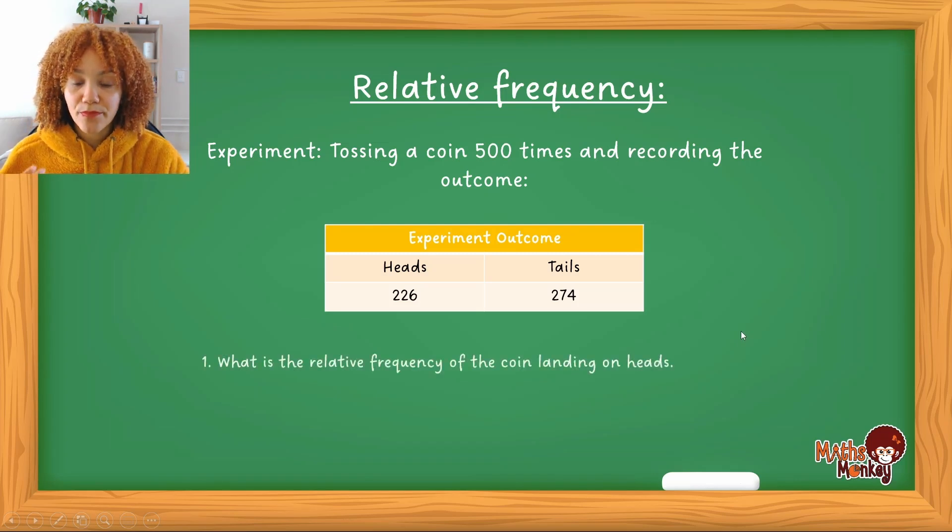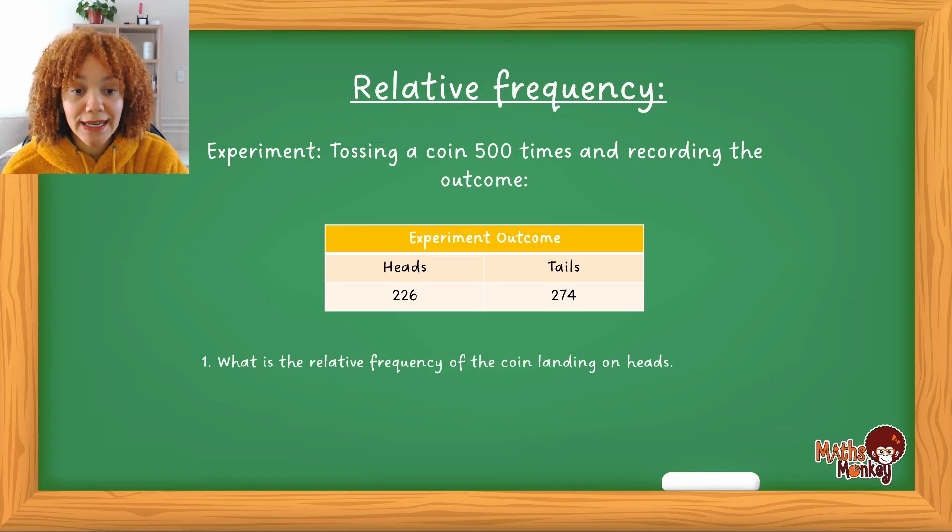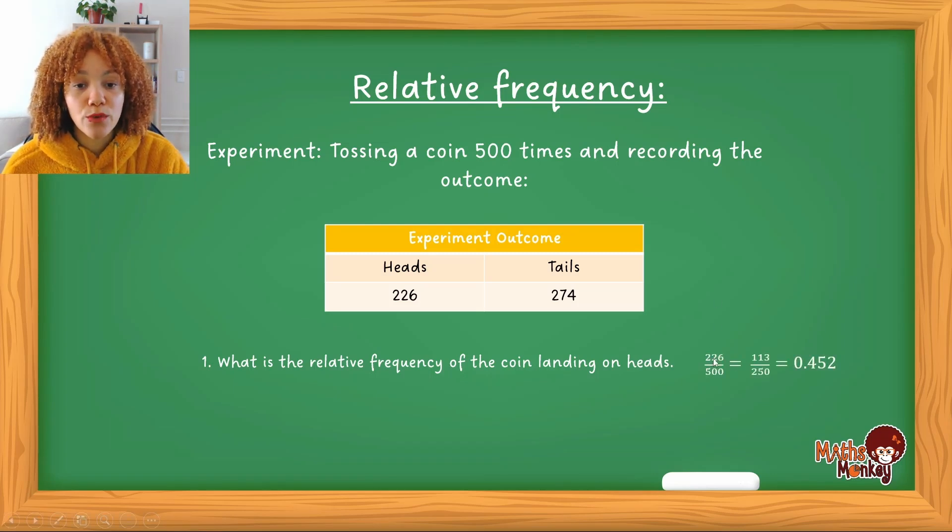This is based on an actual experiment that we are doing. So the question is what is the relative frequency of the coin landing on heads? So relative frequency means how many times did you land on the heads versus how many experiments were actually done in total. So here you'll see that it will be 226 times is how many times you landed on heads out of the 500. So the relative frequency of landing on a head in this case was 0.452.